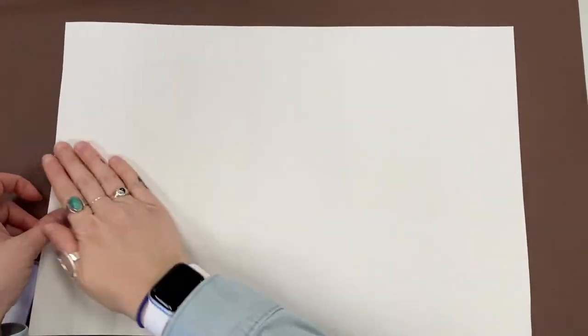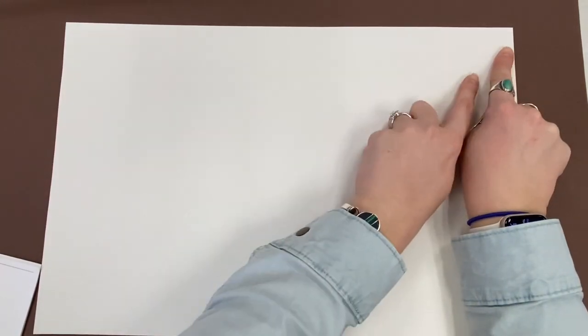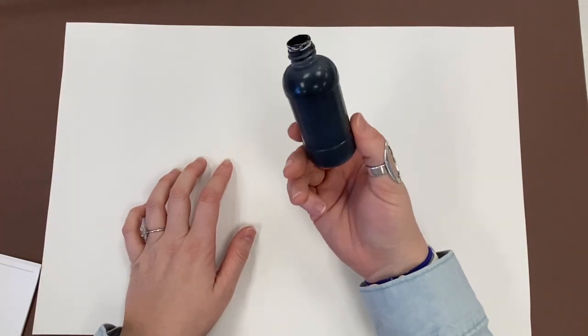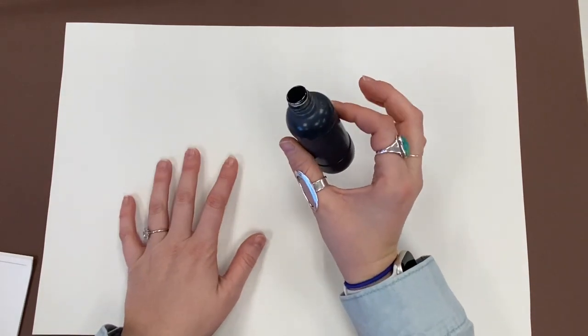Alright, so we got our paper turned so it is long in front of us and we're going to draw two horizontal lines along the longer side and we're going to be using our paint marker or bingo dauber. When you're using this make sure we're not squeezing it or shaking it because it will make a big old mess.